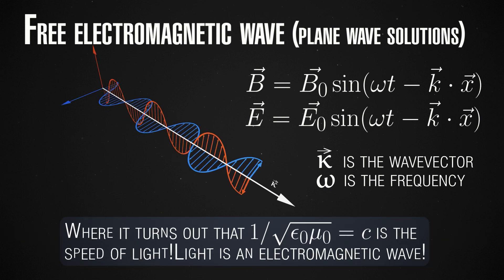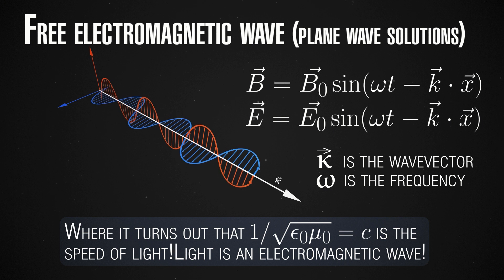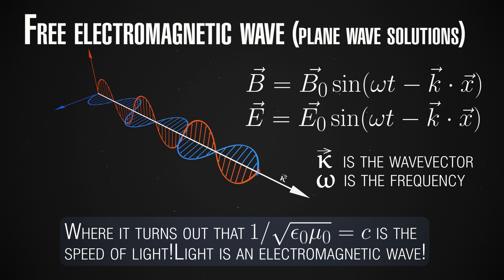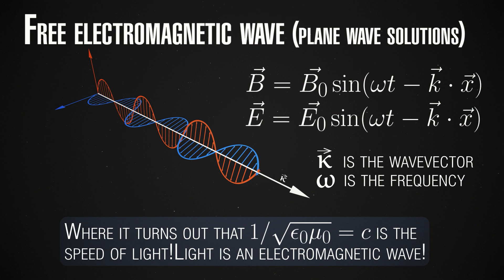c squared equals 1 divided by epsilon zero times mu zero — this is something very crucial. The first person to realize this was James Clerk Maxwell. He derived these equations, found the vacuum wave solutions, and computed the speed at which the waves must travel. He had no idea at the time that light is an electromagnetic wave — in fact, no one knew — but the speed of light was well measured. By comparing the ratio 1 over epsilon zero mu zero with the experimentally known speed of light, he found the two were extremely similar. It was too much of a coincidence to overlook, so he concluded that light must be electromagnetic waves, and was indeed the first to realize this.